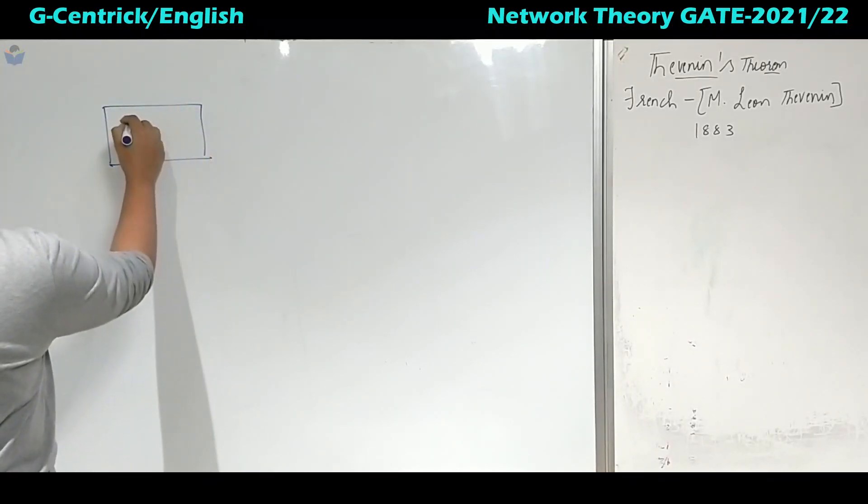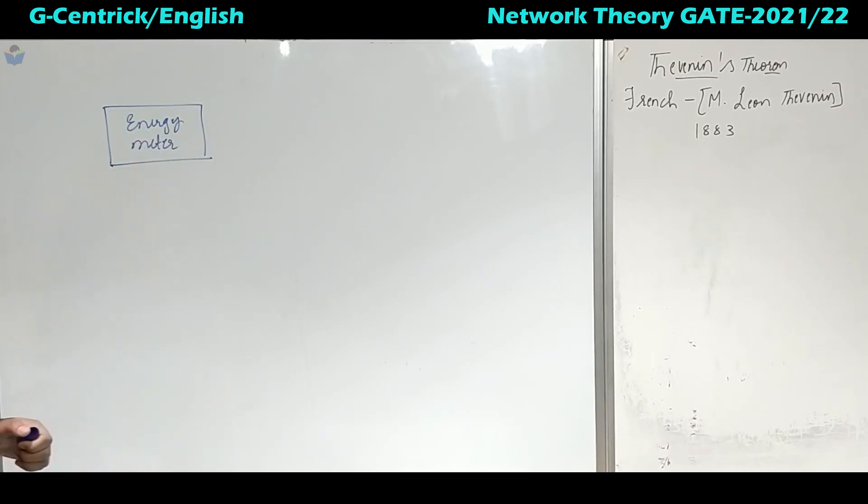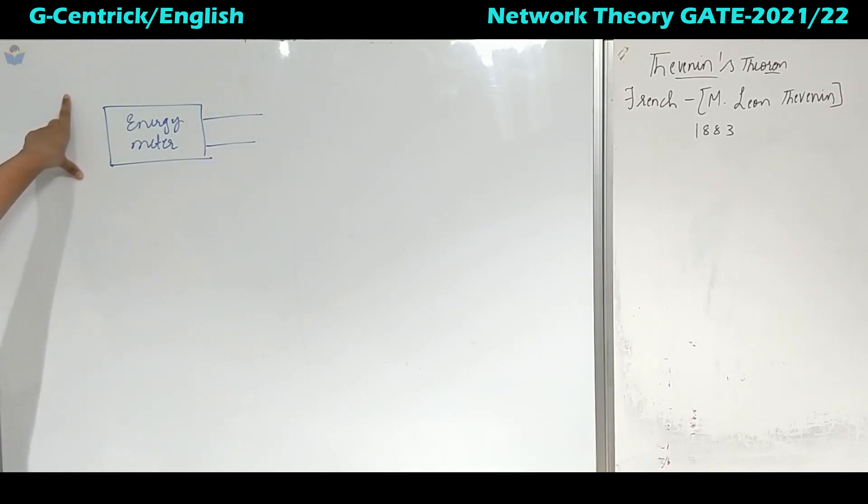We know where this energy comes from, where the power comes from, from the power plants. We get electricity from power plants but that part we will ignore and we will start with the energy meter. This energy meter is connected outside the house. This box will be present outside the house.